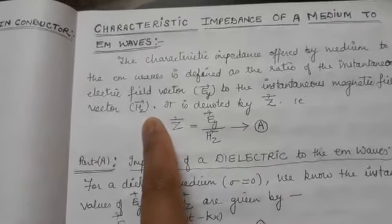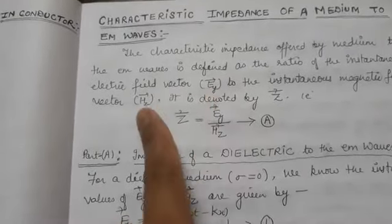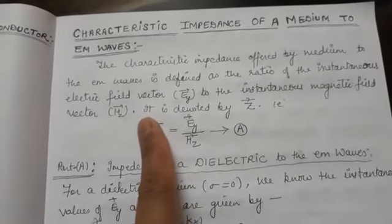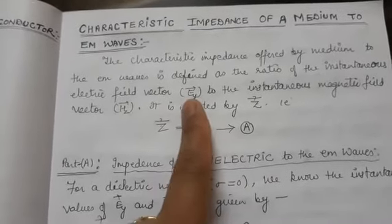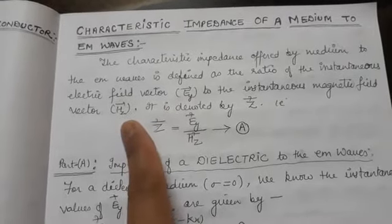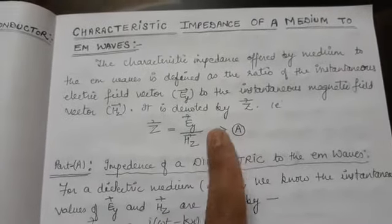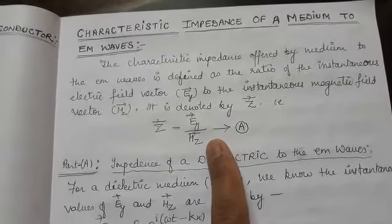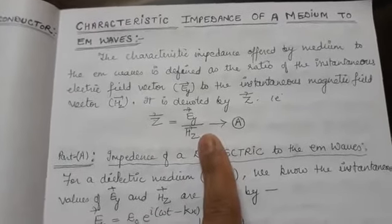I will draw your attention to why I have taken EY and HZ instead of E vector and H vector. Here I am already considering the plane polarized electromagnetic wave in which the wave is propagating along the X-axis, the electric field is directed along the Y-axis, and the magnetic field is directed along the Z-axis. So for such a wave, impedance is given by equation A — the characteristic impedance offered by a medium to the electromagnetic wave.